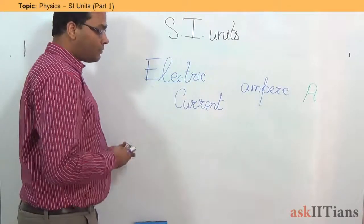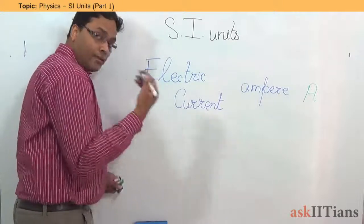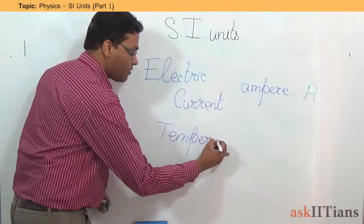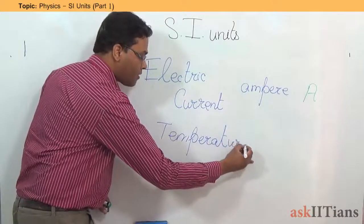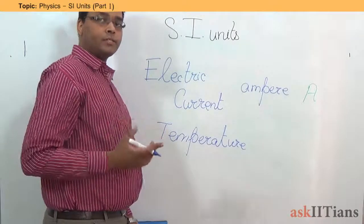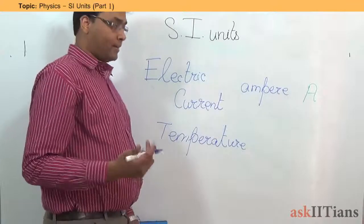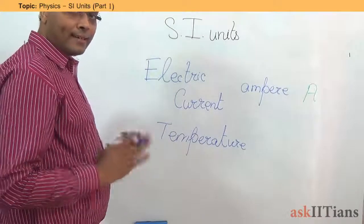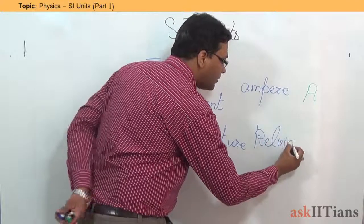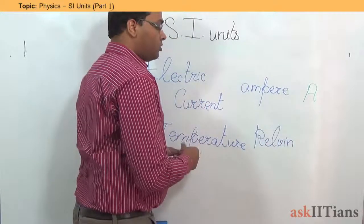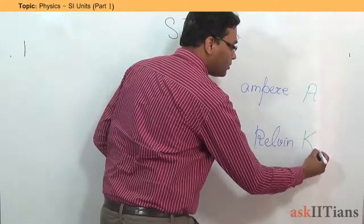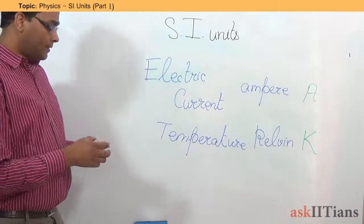Then, the next one is a very common thing. It is temperature. Now, you are familiar with measuring temperature in degrees centigrade and sometimes in degrees Fahrenheit. But the standard international system of units state that you need to measure it in Kelvin. Kelvin is related to degrees centigrade as well, we will discuss about that. So, this is denoted by K.